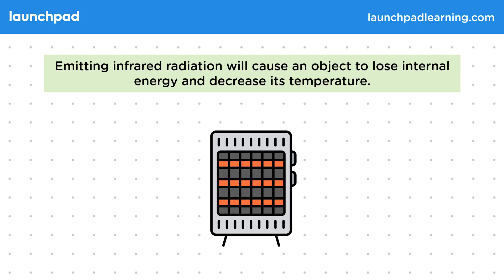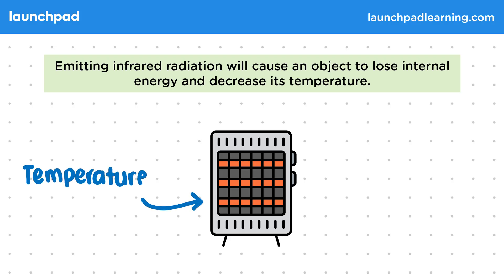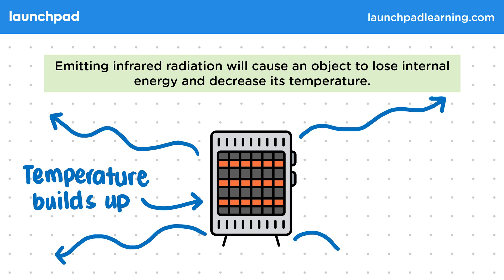We can also make deliberate use of this with an electric heater. As we pass a current through the heater, it causes its temperature to build up. Objects with high temperatures have a lot of internal energy. The heater will emit a lot of infrared waves, which is how it releases the heat that has built up — but remember that it will still be absorbing infrared waves at the same time.